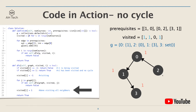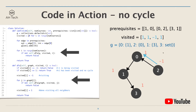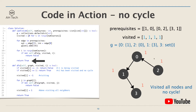Now the only node that hasn't been visited is node 2, so we start another DFS call from node 2. We flag node 2 as negative 1, then DFS into its neighbor node 0. From the previous DFS call, node 0 has already been visited and no cycle was detected, so this DFS call ends here. We change the flag of node 2 to positive 1, and now all nodes have been visited with no cycle found. So in this example we are able to finish all the courses.